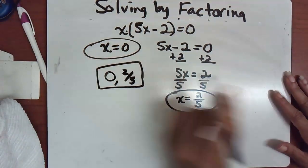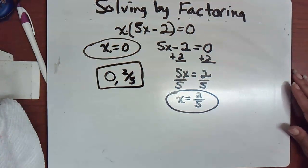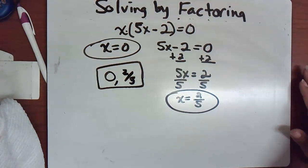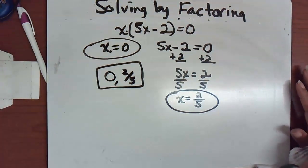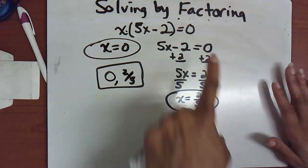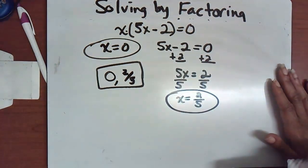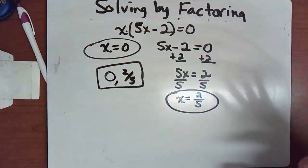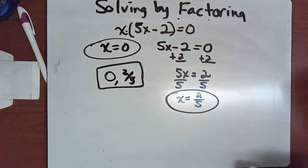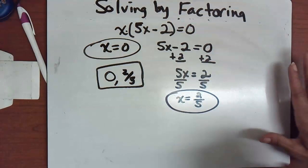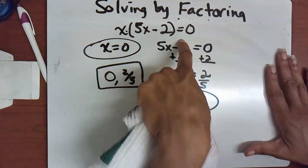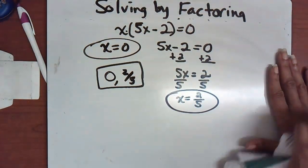When solving by factoring, the equal sign being present in the original problem tells you that you're solving — not just factoring. Previously we were just factoring expressions with no equal sign. Now with an equal sign, we're solving for x.